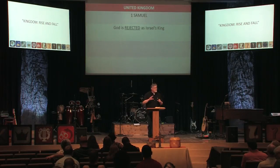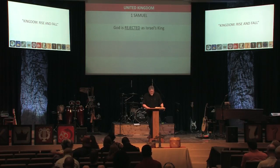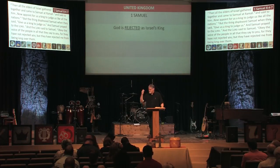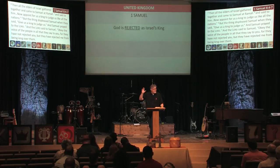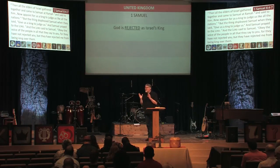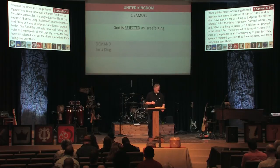The book of 1 Samuel tells us how God is rejected as the king of Israel. The book divides into three sections: one about Samuel, one about Saul, and one about David. In the Samuel section, there's a demand for a king — that's the first part of the book.